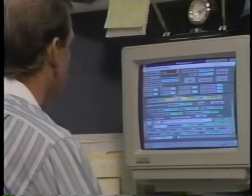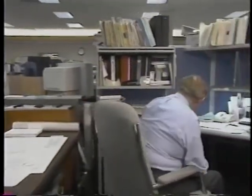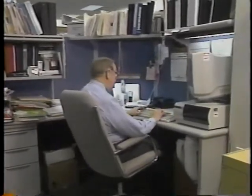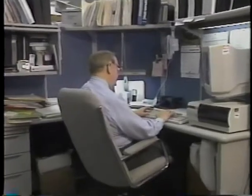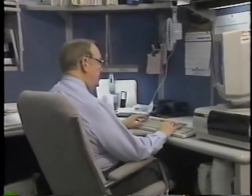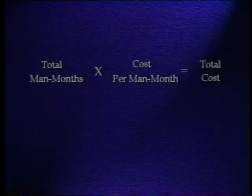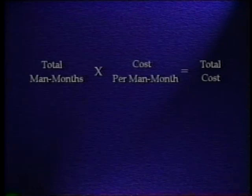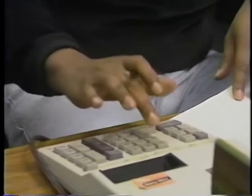A budget is developed to plan for the costs of construction management. Construction management costs can be budgeted by contract with sufficient accuracy using standard costs. The basic computation is: total man-months times cost per man-month equals total cost. Computations should be made for each applicable contract and totaled to determine the required budget. The budgeting procedures are designed for manual computation but can also be done by computer.